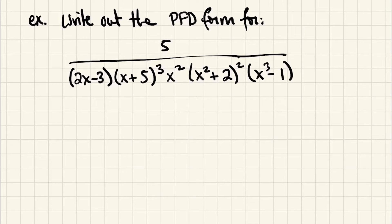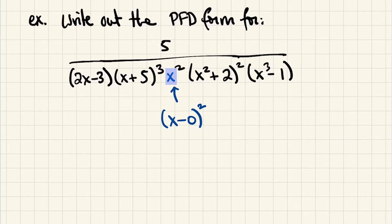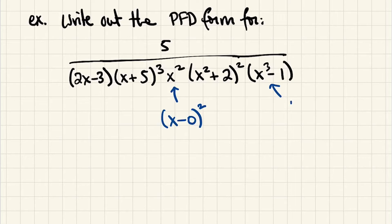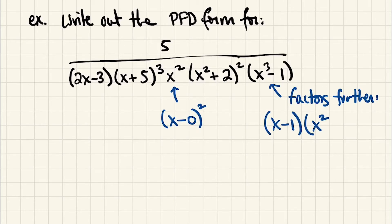Our next example has basically every possible complication. We just want to write out the PFD form — we won't even find the coefficients as it would be too tedious. The first step is to completely factor the denominator down to linear factors or irreducible quadratics. We have two linear factors, and x squared is a linear factor squared — think of x as (x minus 0), which is linear with multiplicity 2. The factor x squared plus 2 is an irreducible quadratic with multiplicity 2. And x cubed minus 1 is not fully factored — it factors further using the sum/difference of cubes formula into an irreducible linear and an irreducible quadratic.